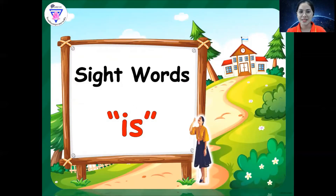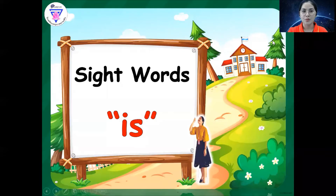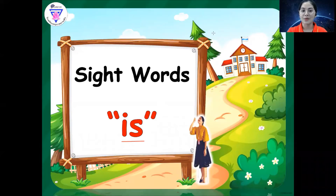Do you understand? Great job! So as you can see on the screen, we have here the sight word is. I-S — Is. Very good. So that is the sight word is.